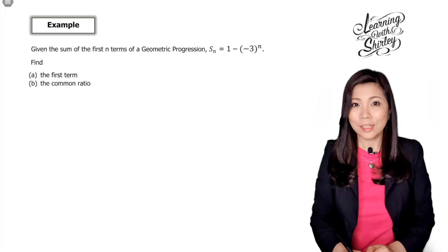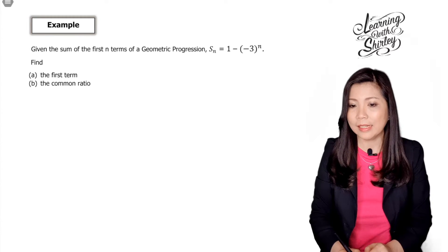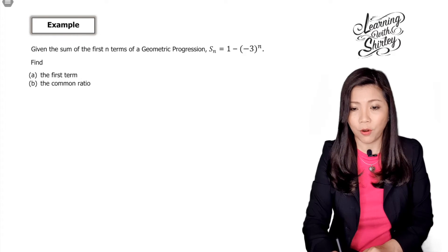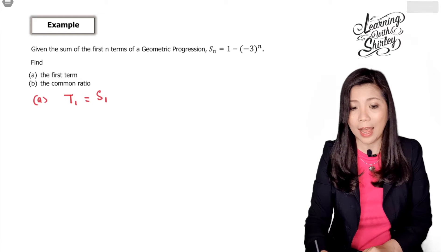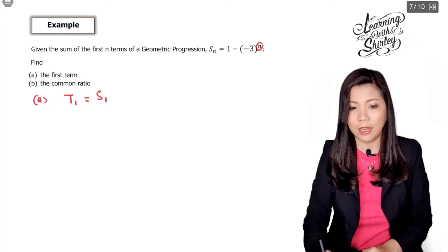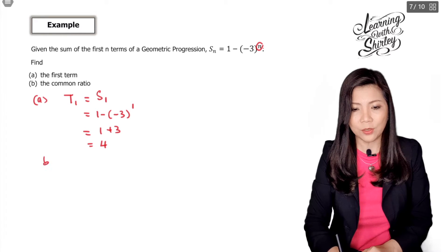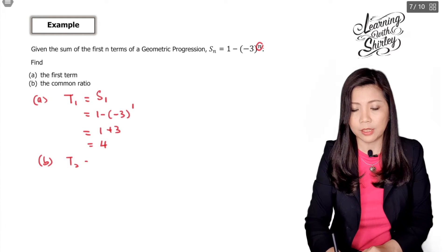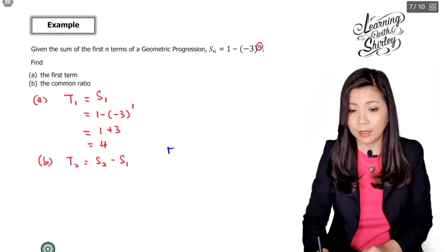Given the sum of the first n terms of a geometric progression: Sn equals 1 minus negative 3 to the power of n. Find the first term and the common ratio. For part (a), the first term: t1 equals S1, so we substitute n equals 1 into the formula, giving 1 minus negative 3 to the power of 1, which equals 1 plus 3, equals 4. So the first term a equals 4.